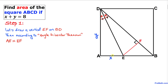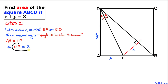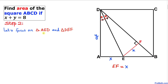According to the angle bisector theorem, side AE and side EF are equal in length. Since AE is x, EF also turns out to be x. Now let's focus on triangles AED and DEF.